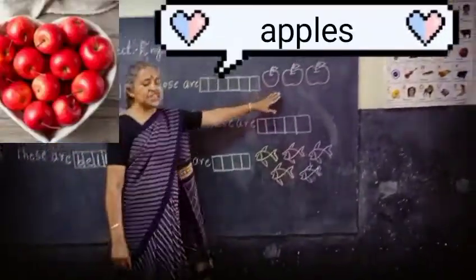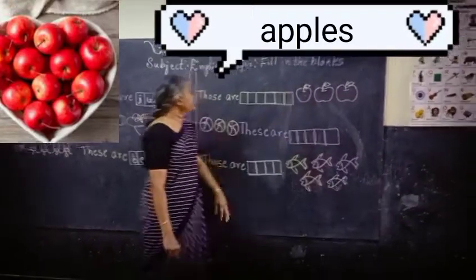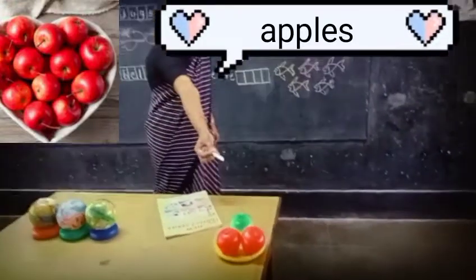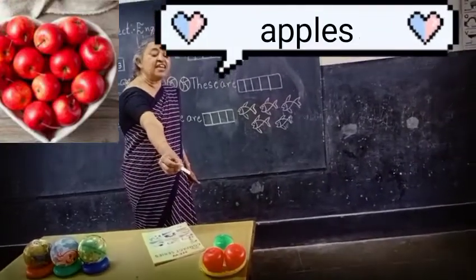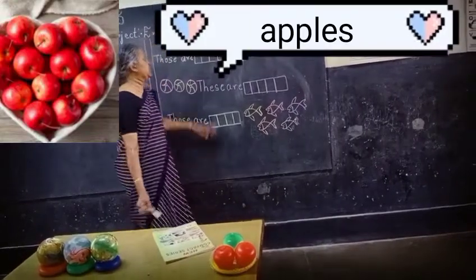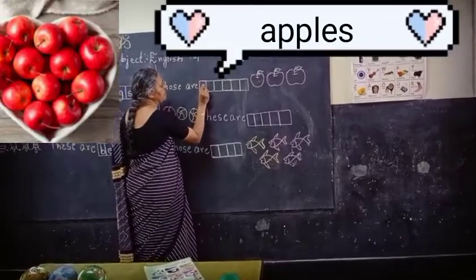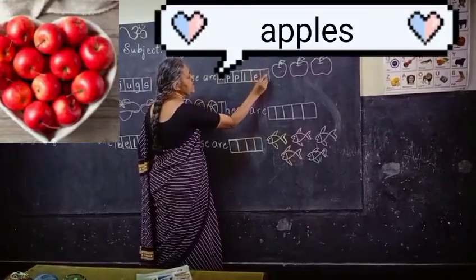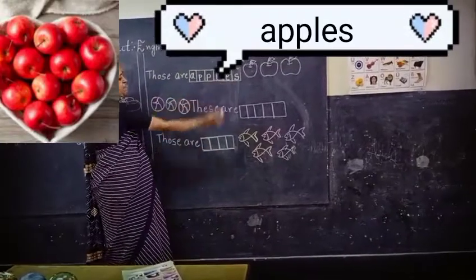See this picture, children, and identify. This is about near and far. Those are Apples — those are Apples. You have to learn the spelling of Apples — A-P-P-L-E-S, Apples.